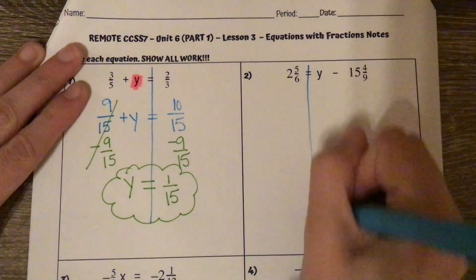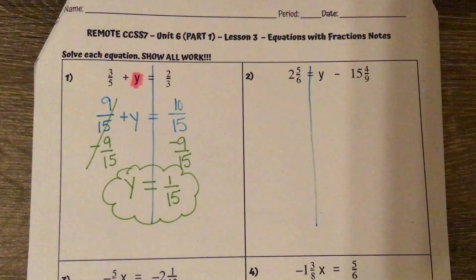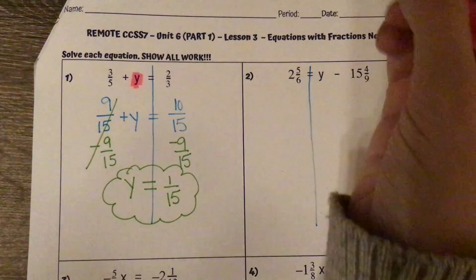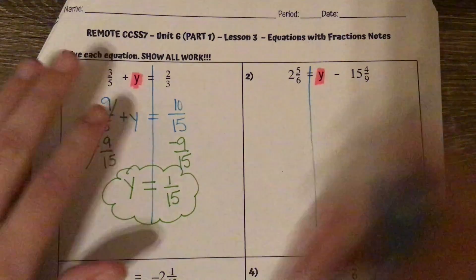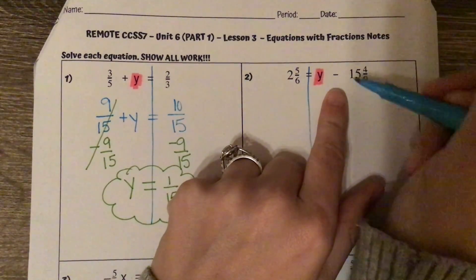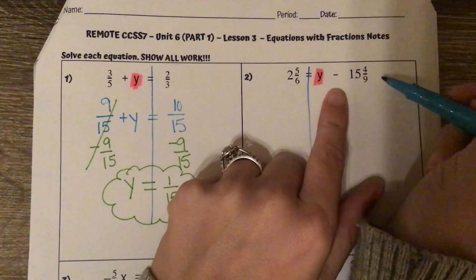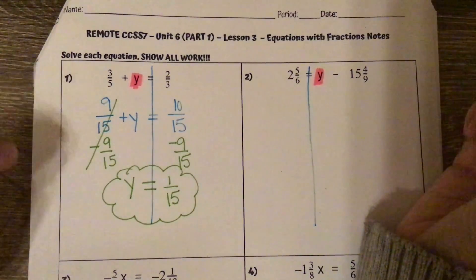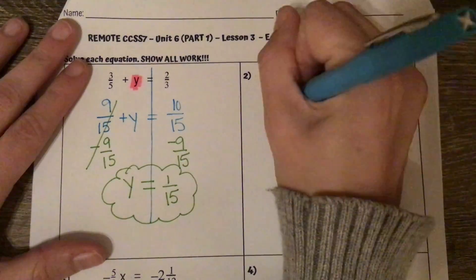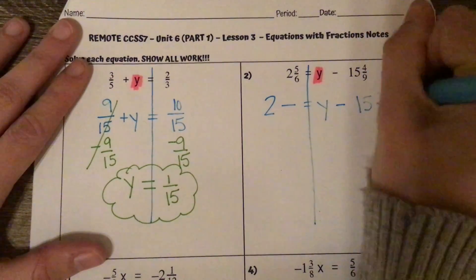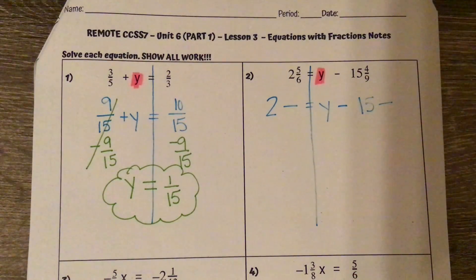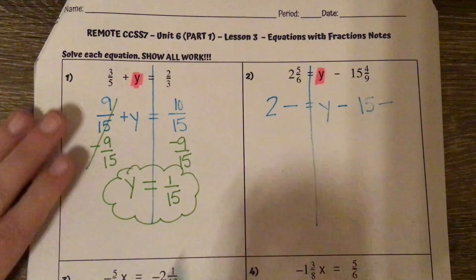Number 2. Drawing my line down the equal sign and highlighting my variable. I'm looking and I see that I'm subtracting — I've got a negative constant that I need to add. Since I'm adding, I'm going to need common denominators. So first, I'm going to rewrite these fractions with common denominators. 9 and 6 — their least common denominator is 18.